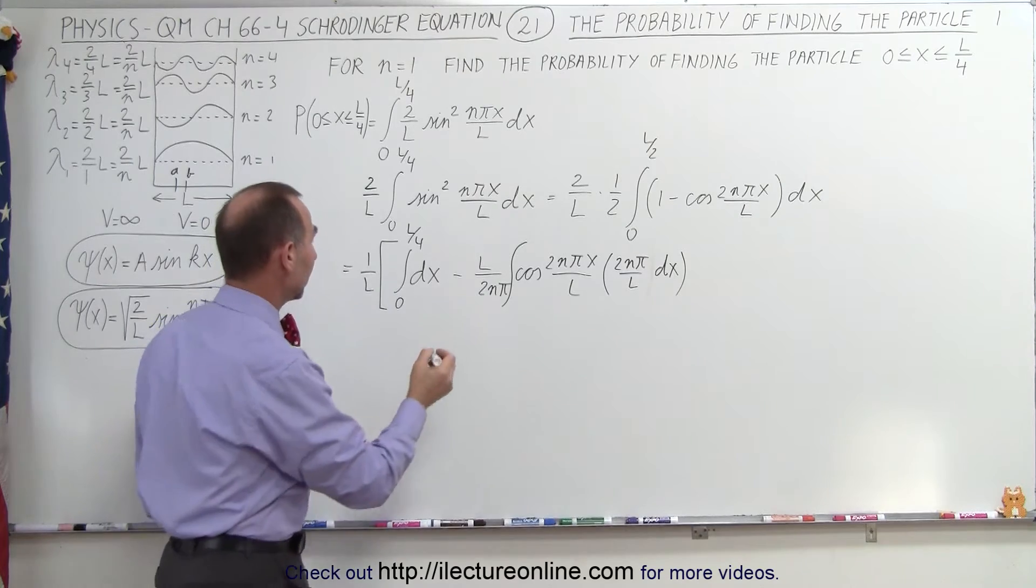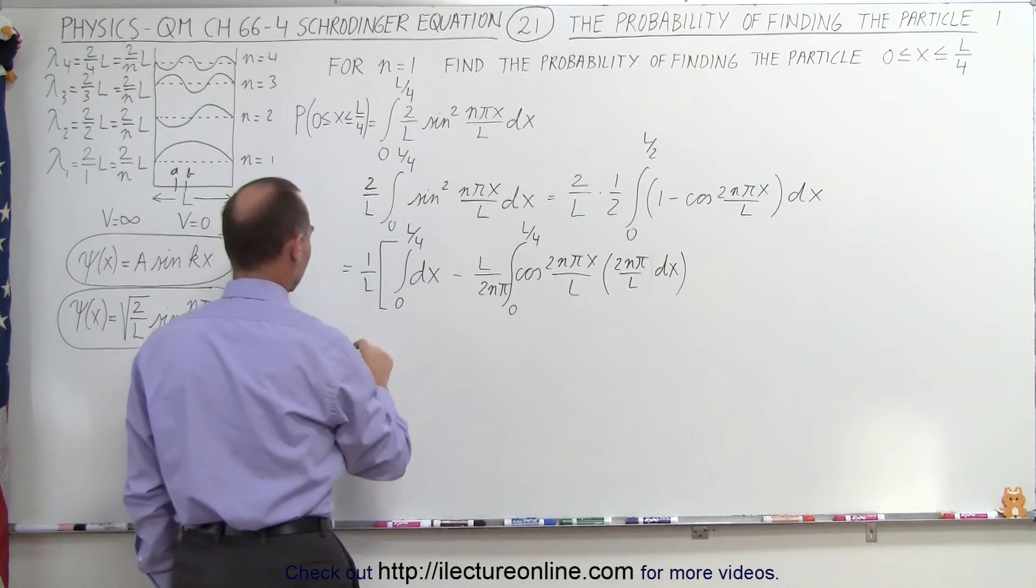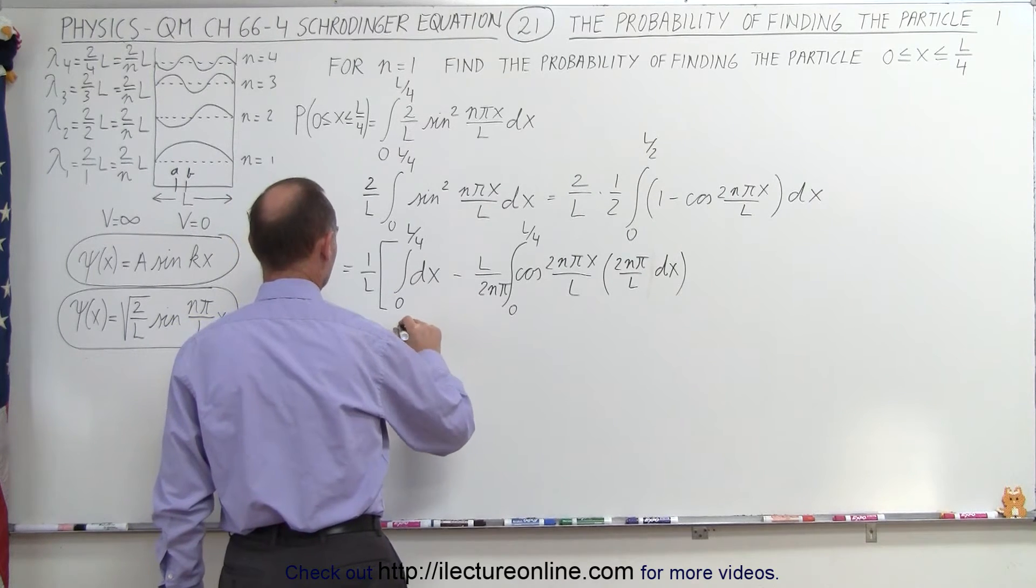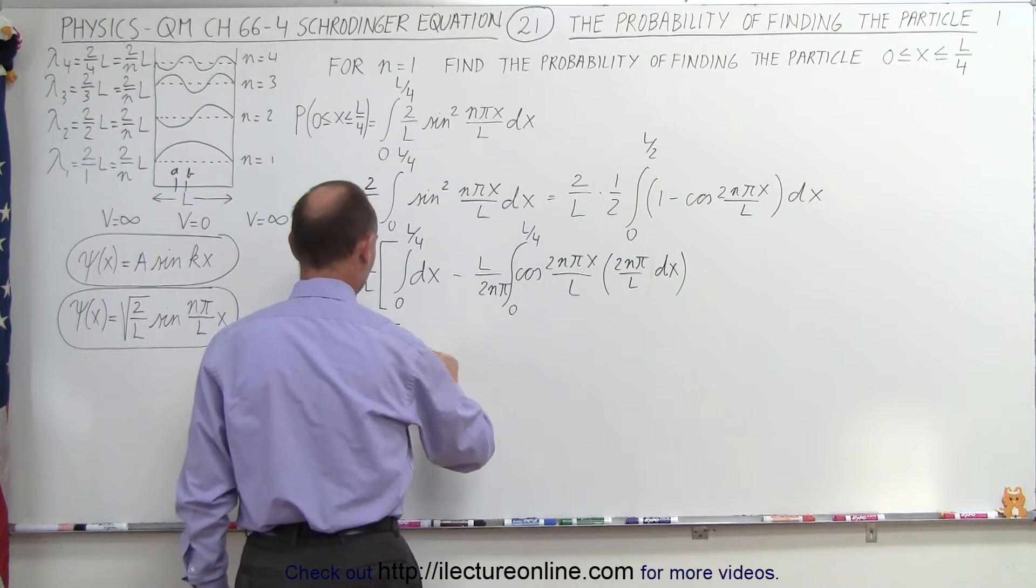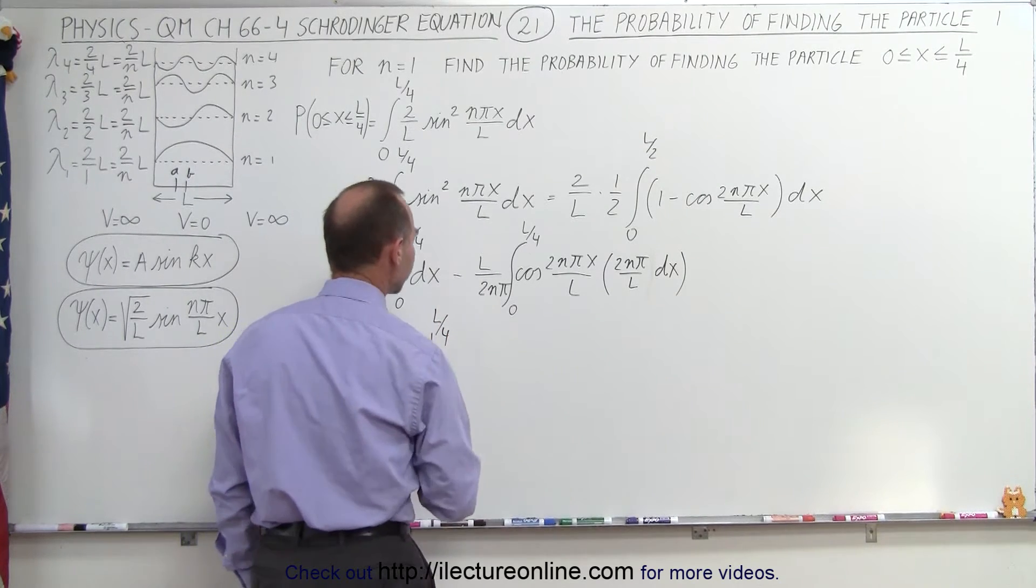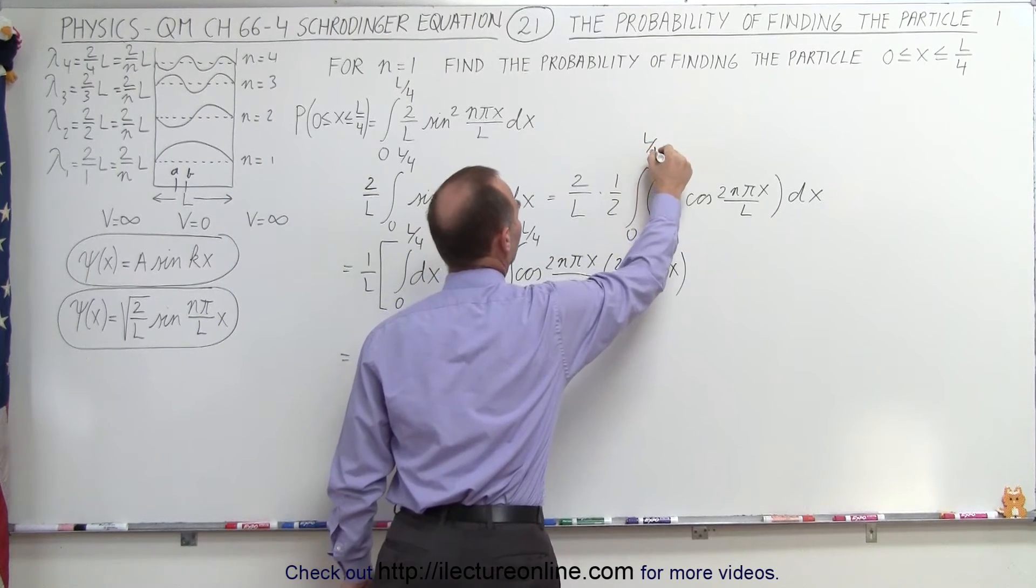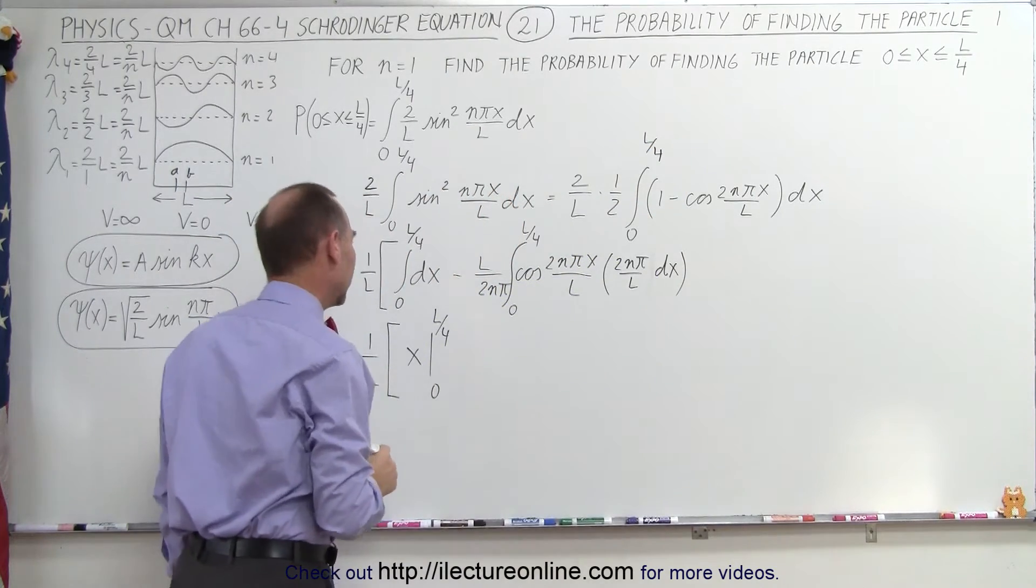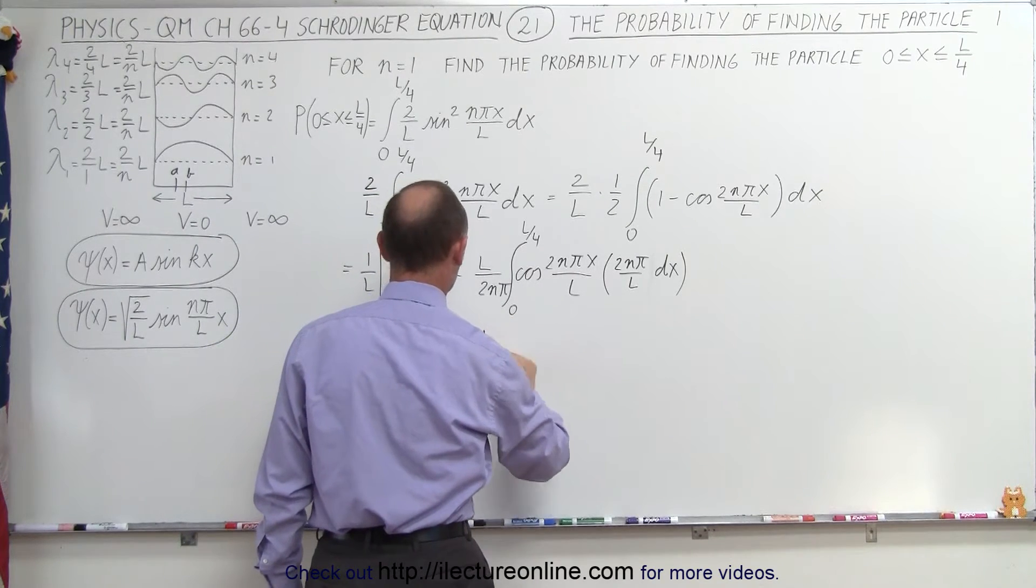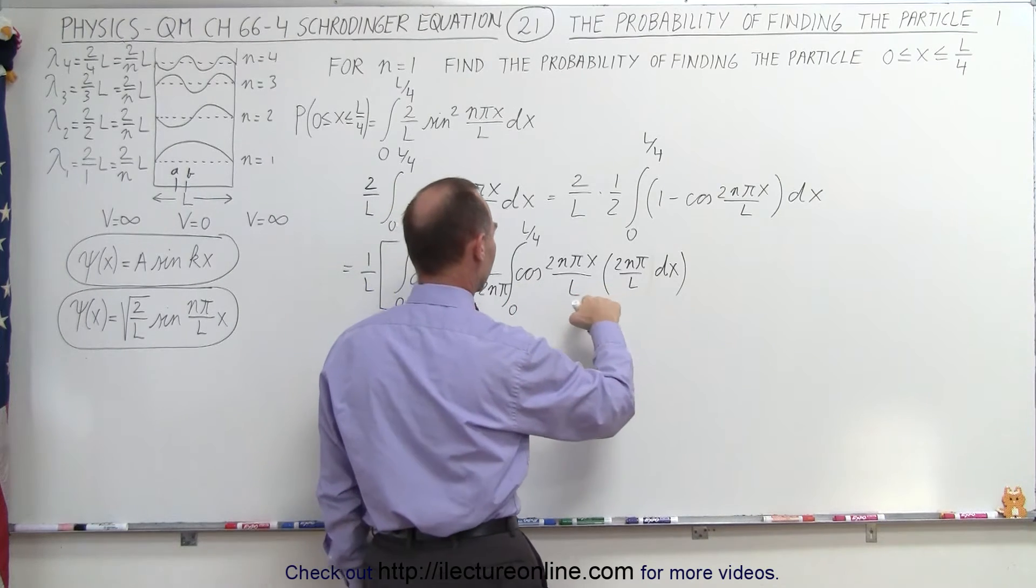So now we're ready to integrate, and I still need my limits, 0 to L over 4. So our first integral here gives us 1 over L times, and here we simply have x evaluated from 0 to L over 4. And then notice that this should also be L over 4, not L over 2.